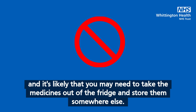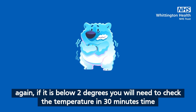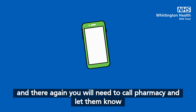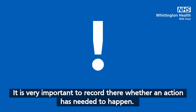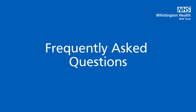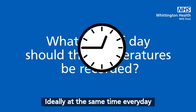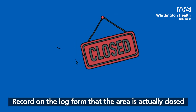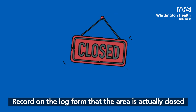If still out of range, it's likely that you may need to take the medicines out of the fridge and store them somewhere else. If the temperature is below 2°C, check again in 30 minutes and contact pharmacy to let them know. It's really important to record whether any action has been needed, and temperatures should ideally be recorded at the same time every day.